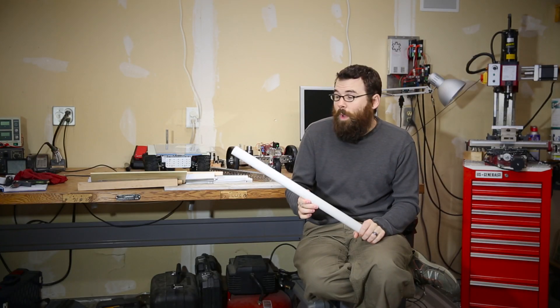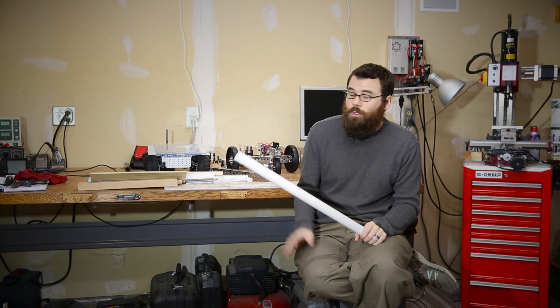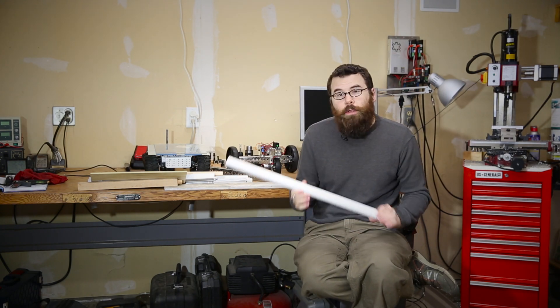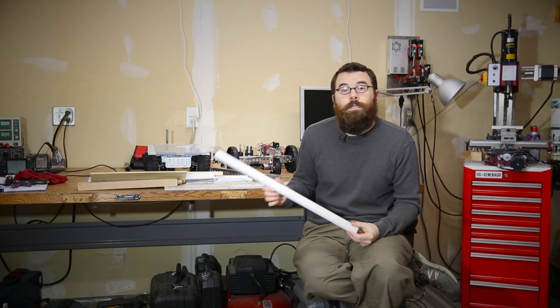PVC also machines relatively well. You can cut it easily with hand tools, drill holes, and do pretty much all the things that you can do with wood or any of the thin plastics as well.